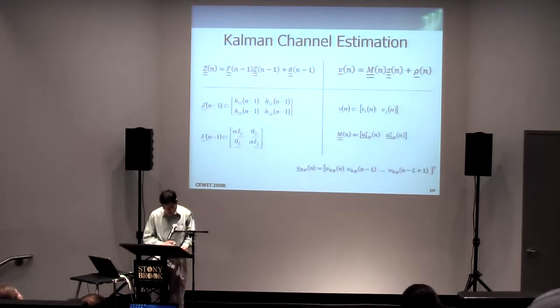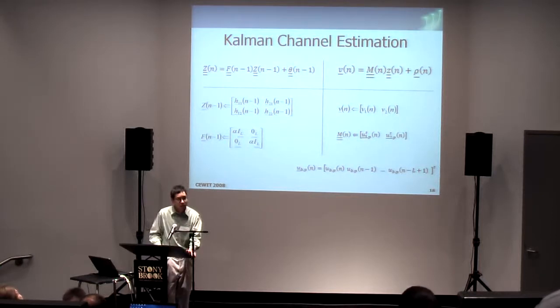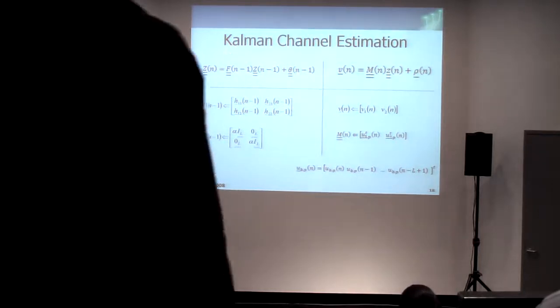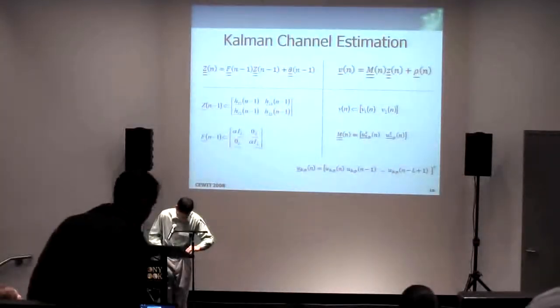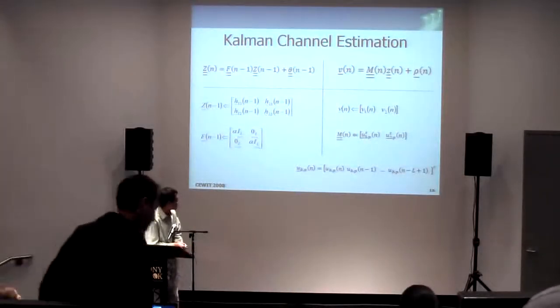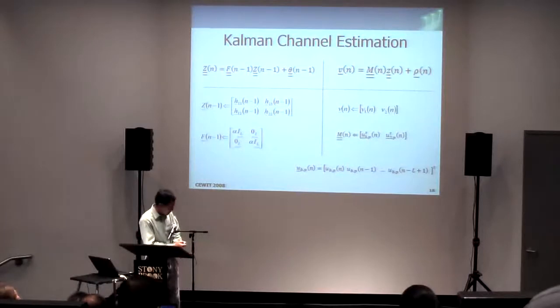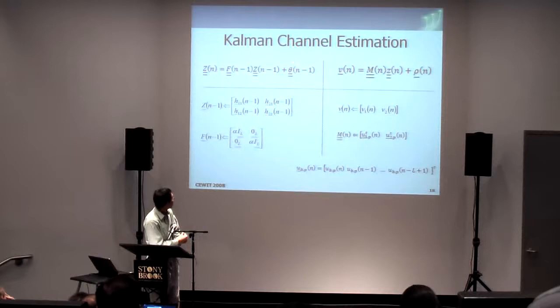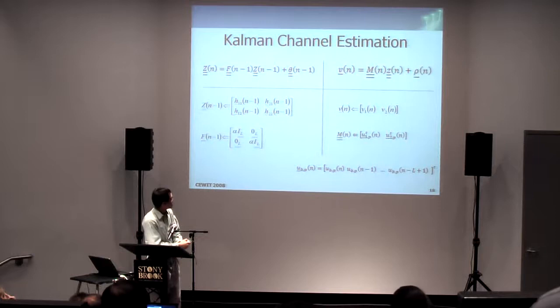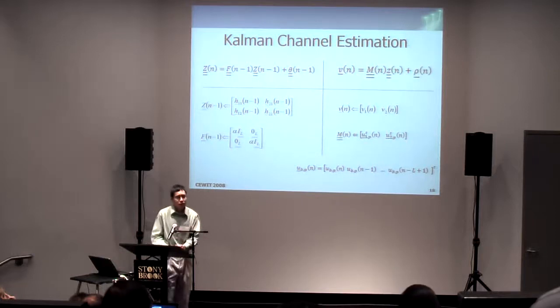The last method is the Kalman channel estimation method. This one, like the NLMS method, is more of some kind of algorithm or process. And this process is called the Kalman process. So what we have is we have two equations, two main equations. We have a state equation and an observation equation. And by plugging in the parameters correctly, we can estimate the channel.